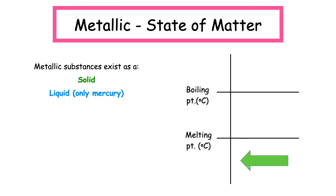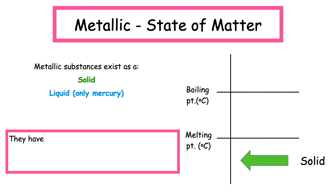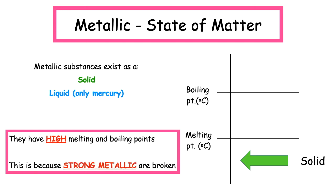As a result metallic substances usually exist as a solid. There is only one liquid metal which is mercury. Because they've got a strong bond they have high melting points and boiling points. This is because the strong metallic bonds have to be broken.